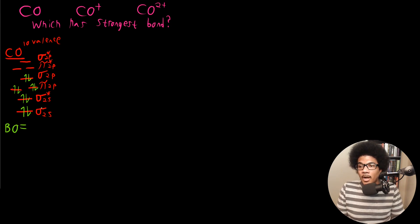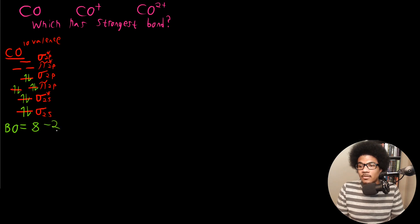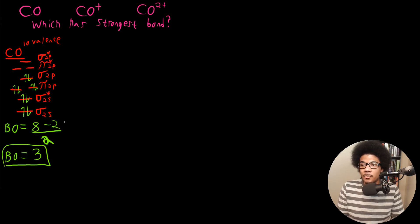Now let's calculate the bond order, which is the number of bonding electrons minus the antibonding electrons divided by 2. For CO, bonding electrons: 2 in sigma 2s, 4 in pi 2p, and 2 in sigma 2p, giving 8 total. Antibonding electrons: 2 in sigma star 2s. So the bond order is (8 minus 2) divided by 2, which equals 3. CO has a bond order of 3.